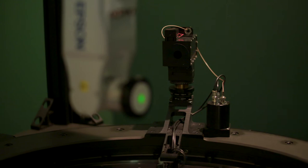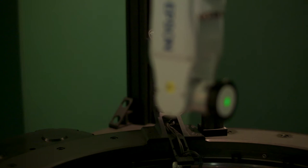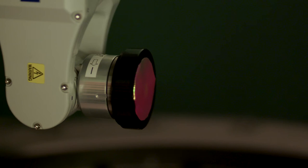For some samples the angular dependence of the light scattering is important, for example polychromatic surfaces such as for cars.